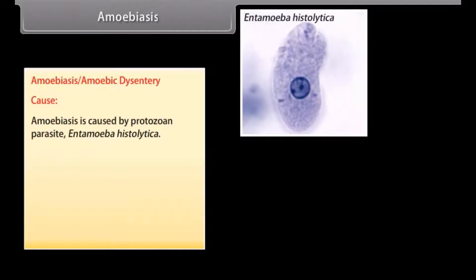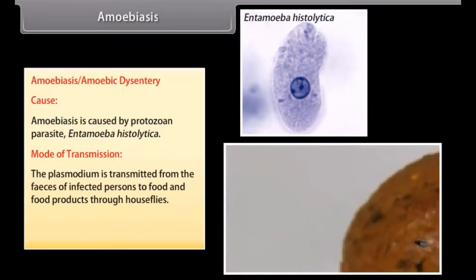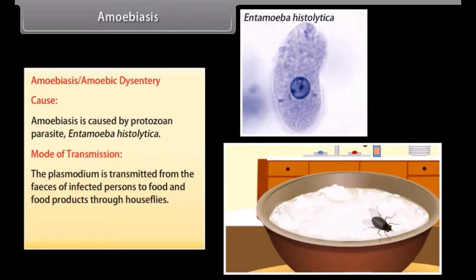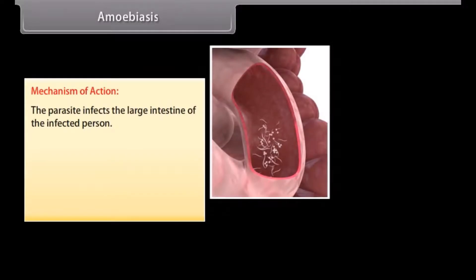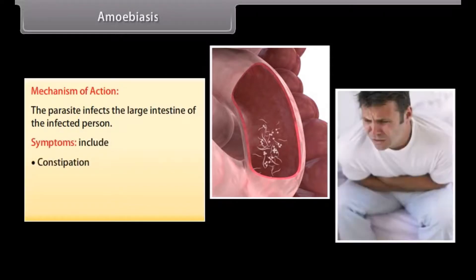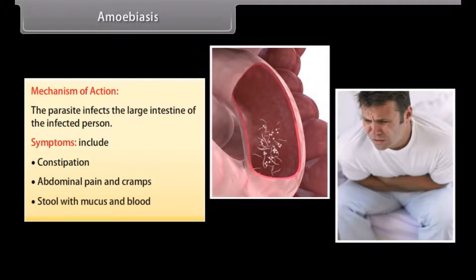Amoebiasis, or amoebic dysentery, is caused by the protozoan parasite Entamoeba histolytica. It is transmitted from the feces of infected persons to food and food products through houseflies, and by consuming contaminated food and water. The parasite infects the large intestine. Symptoms include constipation, abdominal pain and cramps, and stool with mucus and blood.